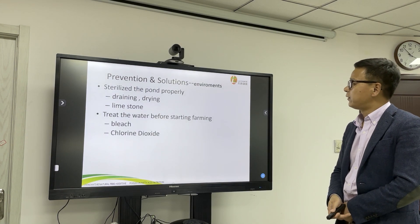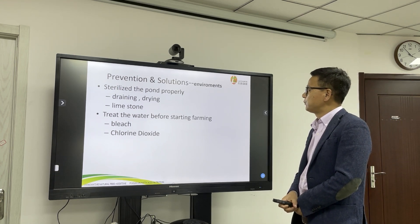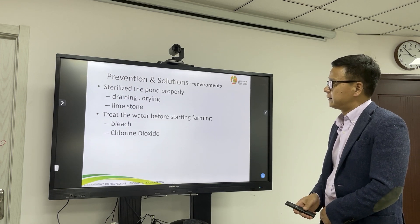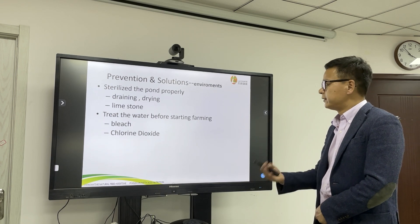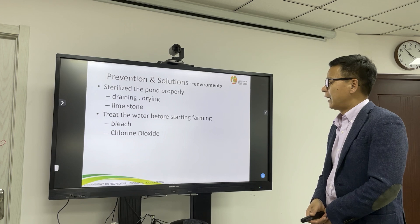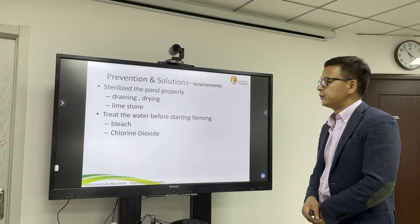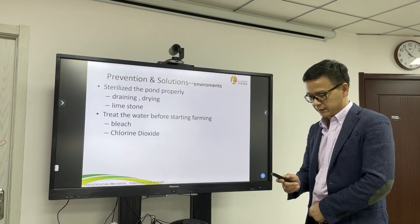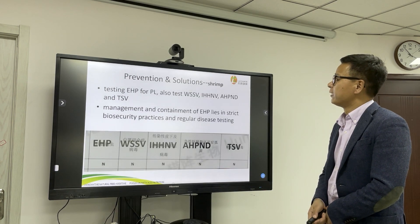What are the solutions for EHP? First, regarding the environment: you have to sterilize the pond properly. You can drain the pond and apply limestone. After that, when you pump water into the pond, it is better to use bleach or chlorine dioxide to treat the water.